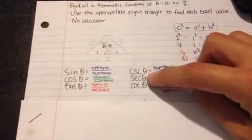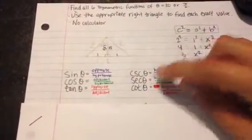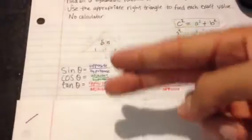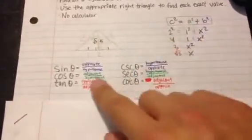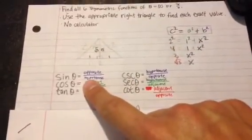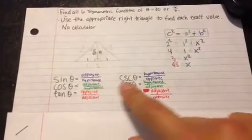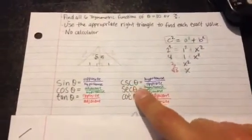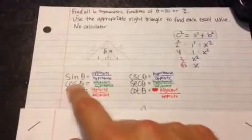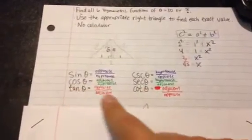Secant, cosecant, and cotangent are literally the flips of these first three over here. So sine is opposite over hypotenuse, cosecant is hypotenuse over opposite, and the trend follows with the others as well.